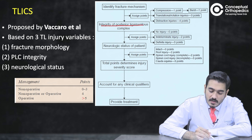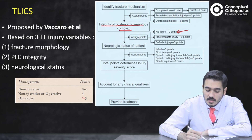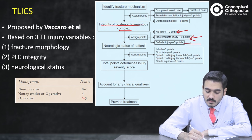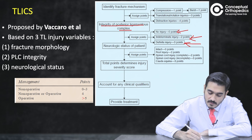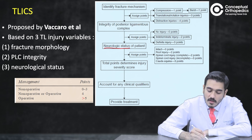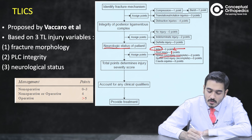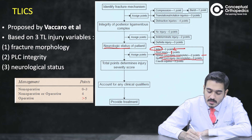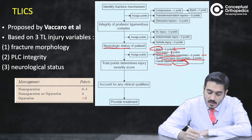The second parameter is integrity of the posterior ligamentous complex: no injury = 0 points, indeterminate injury = 2 points, definitive injury = 3 points. The third parameter is neurology: intact = 0, nerve root injury = 1, complete spinal cord injury = 2, incomplete spinal cord injury = 3, cauda equina injury = 3 points.